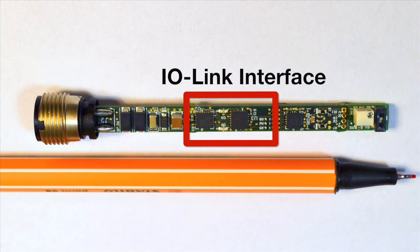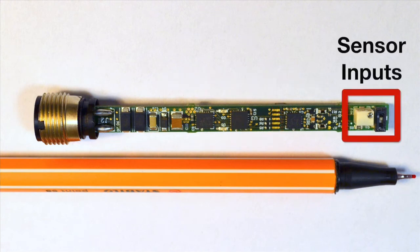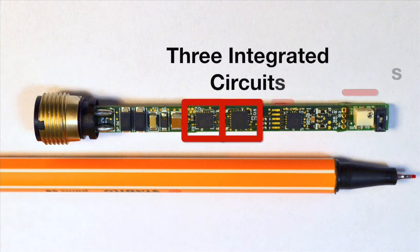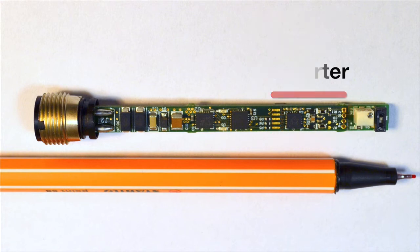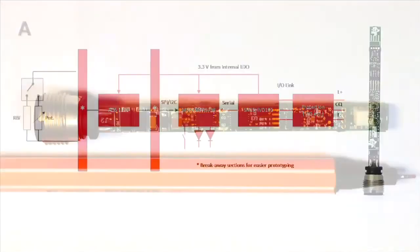The TI system consists of an IO-Link interface, sensor inputs for simulating actual analog, switch, or custom inputs, three integrated circuits, an analog-to-digital converter, a non-volatile memory stack, and a dedicated IC that provides for the physical layer and interfacing.